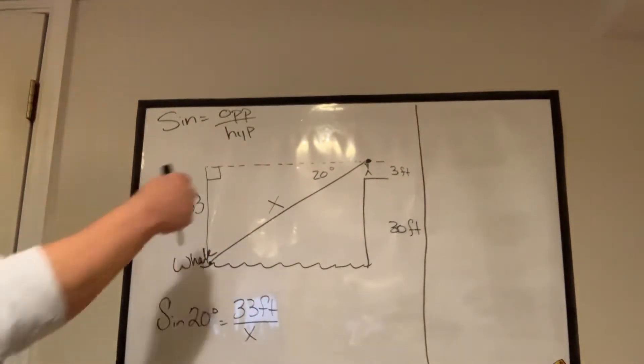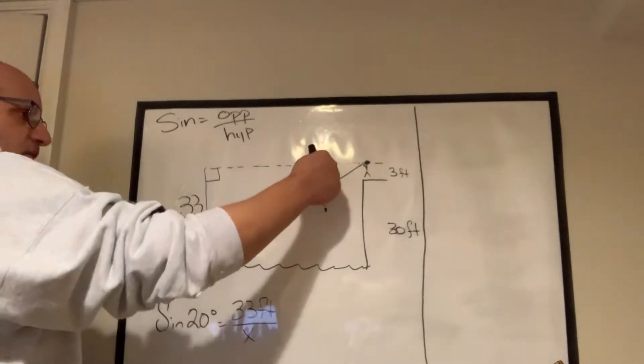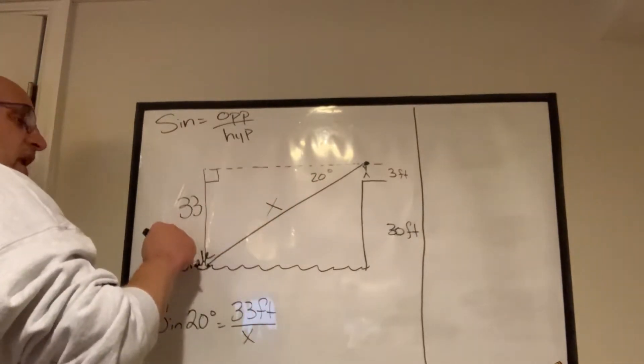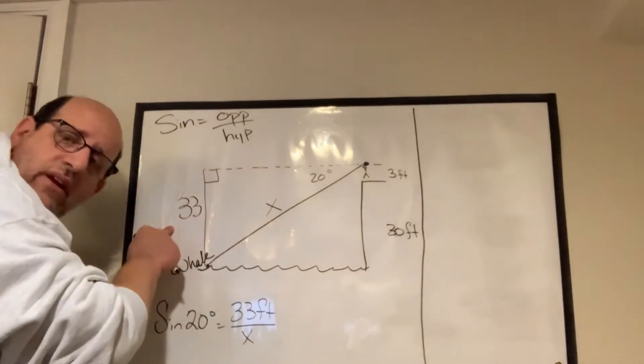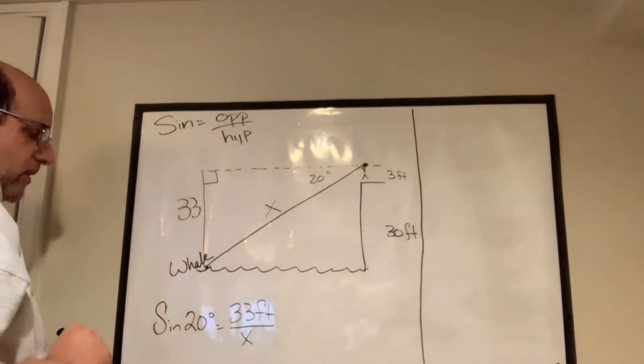The whale is this far away. It's the hypotenuse, the distance from his binoculars. And so the angle of depression is 20 degrees, and we're looking at the side that's opposite that angle of 20 degrees. So we're looking at the sine function here.